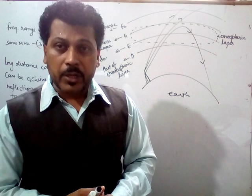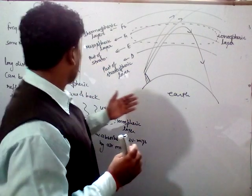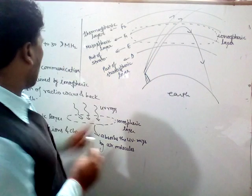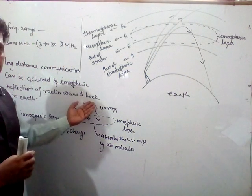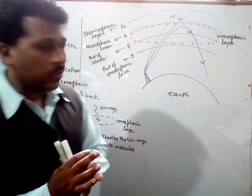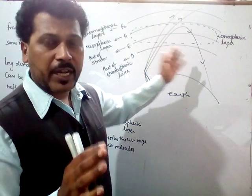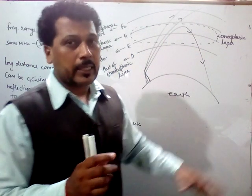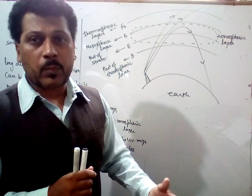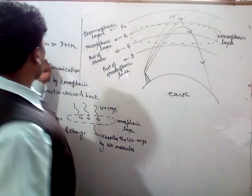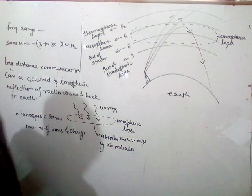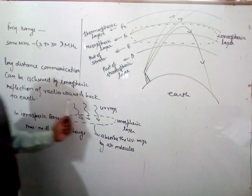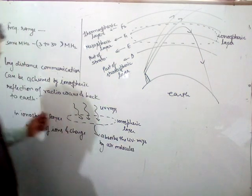Sky waves is another mode of propagation of radio waves. For longer distance communication, it can be achieved by the ionospheric reflection of the radio wave back to the earth. The reflection of radio waves from the ionospheric layer and coming back to the earth is the sky wave propagation. Its frequencies range from 3 to 30 megahertz.